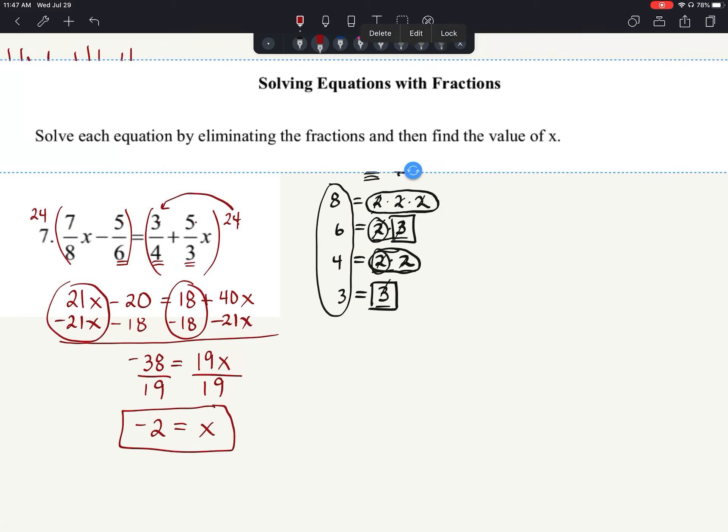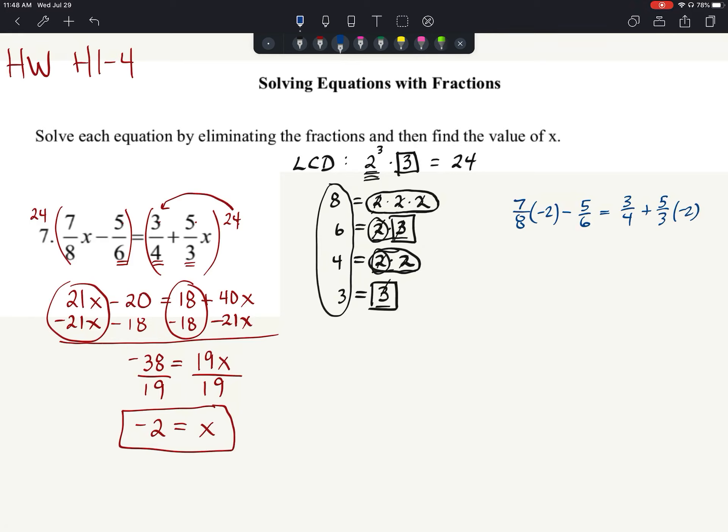If somebody needs to see the check, I'll do the check over here. 7/8 times negative 2 minus 5/6 equals 3/4 plus 5/3 times negative 2. This is going to give us negative 14/8 minus 5/6 equals 3/4 minus 10/3. It's up to you how you wish to do this part - you can multiply everything by 24 again, or you can get common denominators on each side.